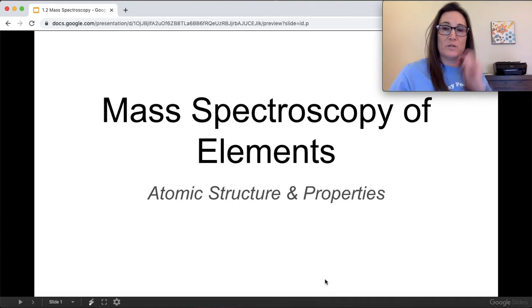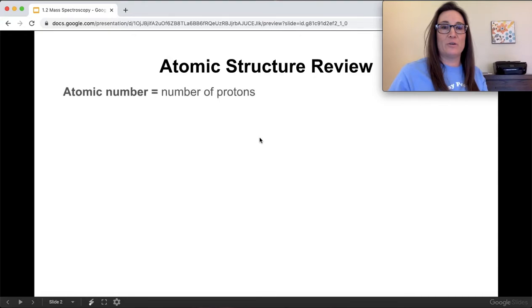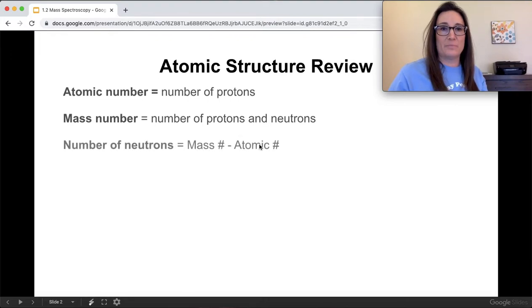We have to know some basic terms first. Atomic number is the number of protons, mass number is the number of protons and neutrons. The mass number, if you take it and subtract the atomic number, you get the number of neutrons.